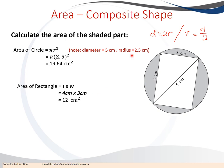Now we have both the circle and rectangle areas. We subtract the rectangle from the circle to get the shaded part: 19.64 - 12 = 7.64. Therefore, the area of the shaded part is 7.64 centimeters squared.